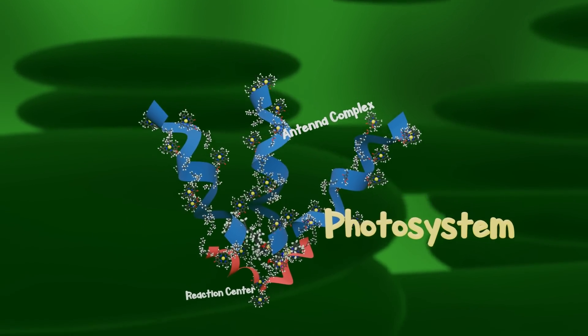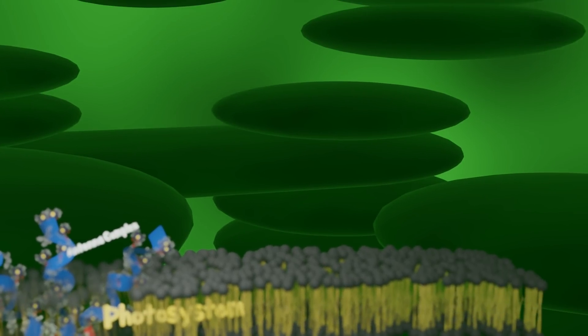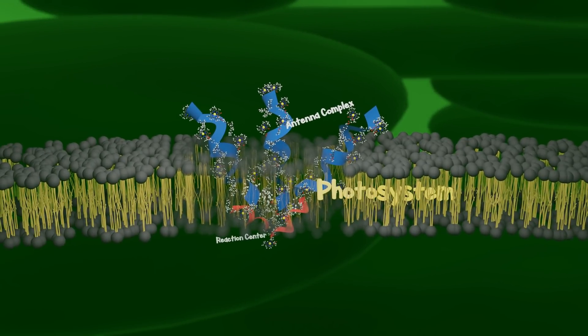Photosystems are themselves embedded in the membrane of thylakoids. We'll learn about those later, but it's important to orient ourselves to break down what happens after a pigment absorbs a photon.